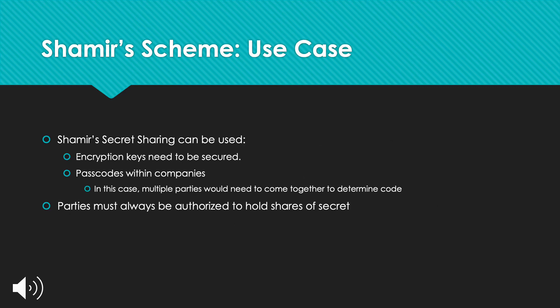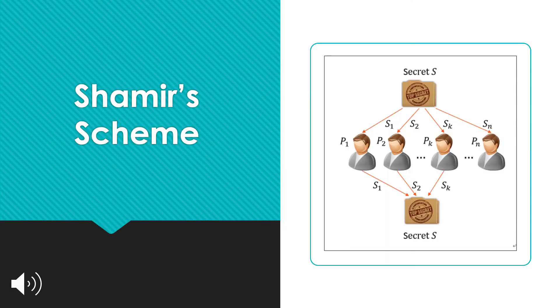As Shamir's scheme is more commonly used in practice, there are many use cases. It can be used when encryption keys need to be secured, or for passcodes within companies, where multiple parties would need to come together to determine the code. Parties must always be authorized in order to hold shares of the secret. This diagram provides an overview: the secret S is divided into shares and distributed among participants, and a given number of participants must come together with their shares to reconstruct and obtain the secret S.